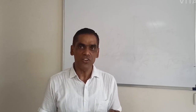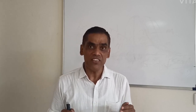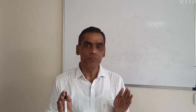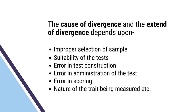There is no perfect normal curve. As a result, there is always some divergence from normality. The question arises: what are the causes and extent of this divergence? It depends on several factors: improper selection of sample, suitability of the test, error in test construction, error in administration of the test, error in scoring, and also the nature of the trait being measured.